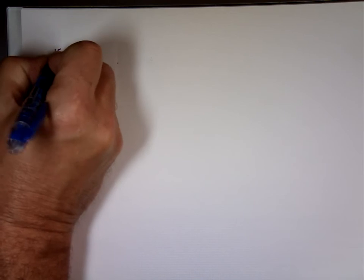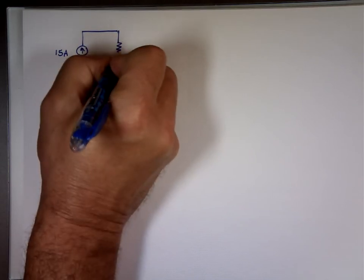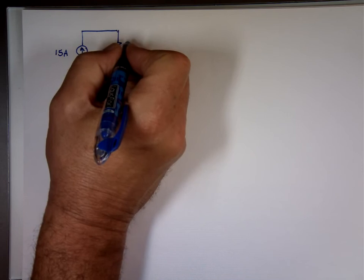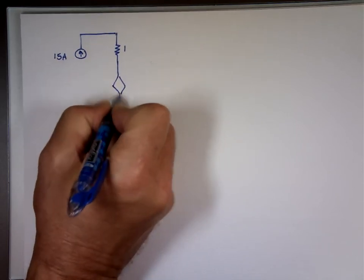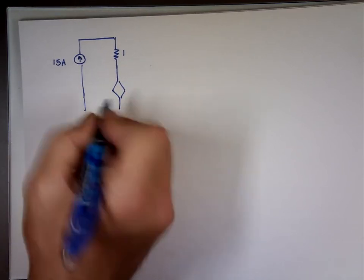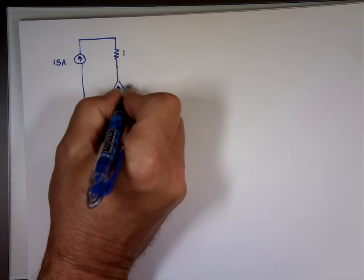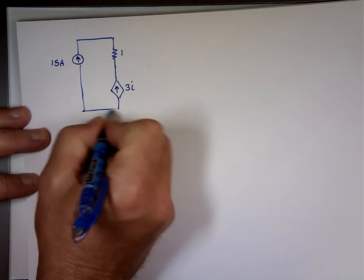So let's look at this circuit. I have a source of 15 amp, independent source, one ohm, and let's put a dependent source here. Bless you.